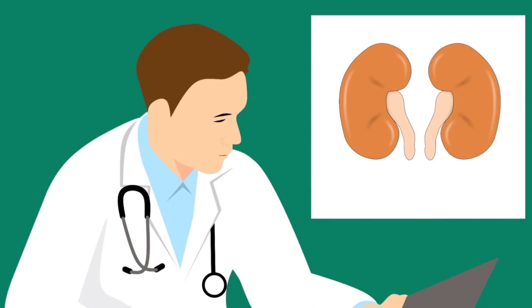Eleventh is kidney disease. Kidney disease means that your kidneys are damaged and cannot filter blood as they should. Obesity raises the risk of diabetes and high blood pressure, the most common causes of kidney disease. Even if you don't have diabetes or high blood pressure, obesity itself may promote kidney disease and quicken its progress.